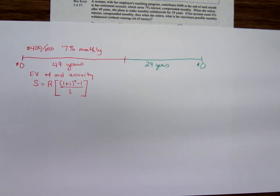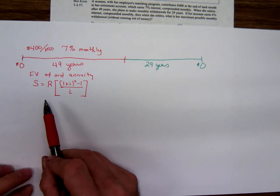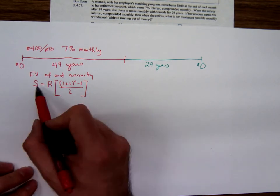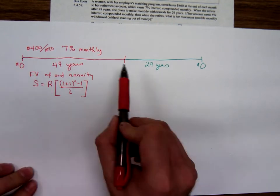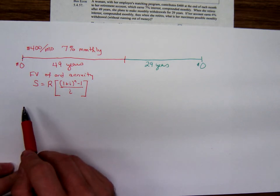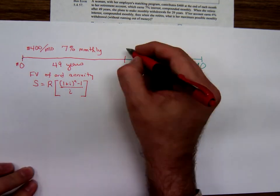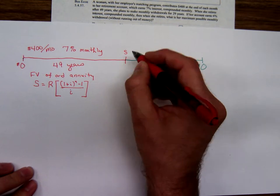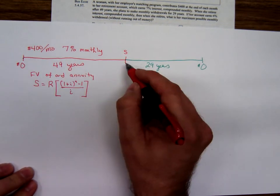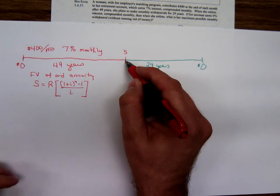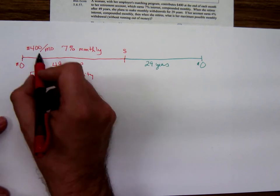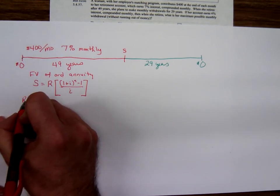We haven't written that formula up today, but it's the one we have been using. So we're going to use the future value of an ordinary annuity to calculate what part of the timeline. What's that going to give us? Right here. That's going to give us that future value of the red timeline. That middle point there. So R is, let's write it out. R is 400.